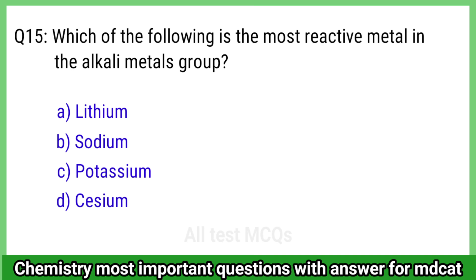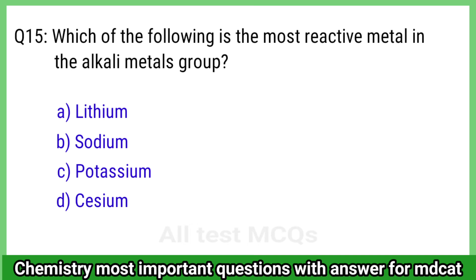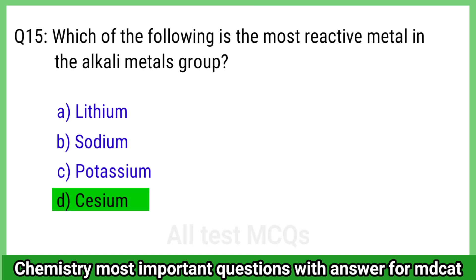Question 15: Which of the following is the most reactive metal in the alkali metals group? The right answer is option D, cesium.